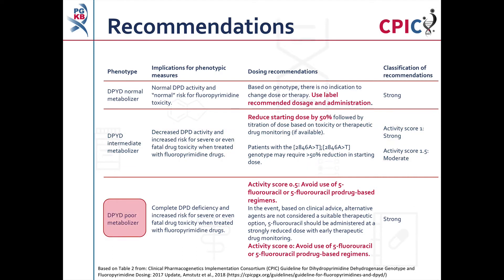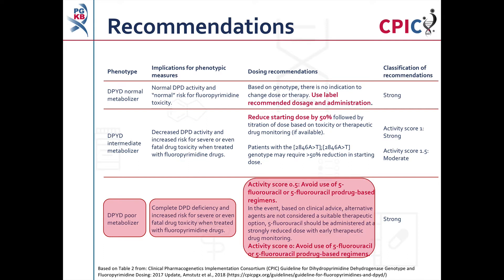Patients who are DPYD poor metabolizers have complete DPYD deficiency and an increased risk for severe or fatal toxicity when treated with fluoropyrimidines. Patients with an activity score of 0.5 should avoid use of fluoropyrimidines or, if this is not possible, be given a strongly reduced dose with early drug monitoring. Patients with an activity score of 0 should avoid use of fluoropyrimidines entirely. The classification for this recommendation is strong.